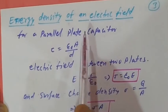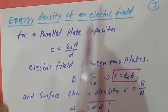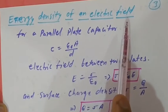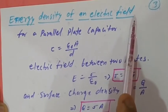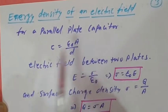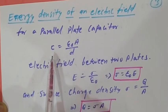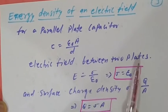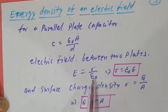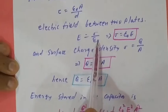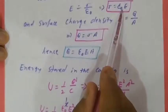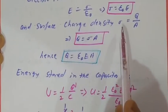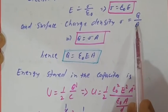Energy density of an electric field between two plates of a parallel plate capacitor. For a parallel plate capacitor, capacitance C = ε₀A/d. The electric field between two plates E = σ/ε₀, or equivalently σ = ε₀E.